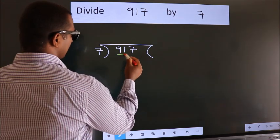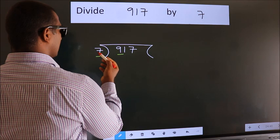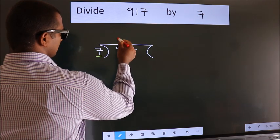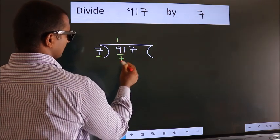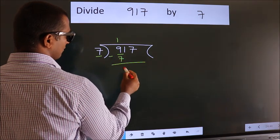here we have 9, here 7. A number close to 9 in 7 table is 7, which is 1×7. Now, we should subtract. We get 2.